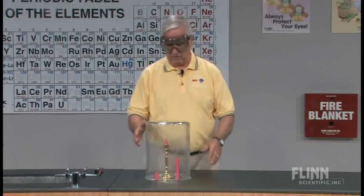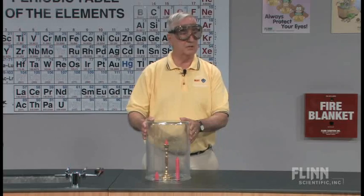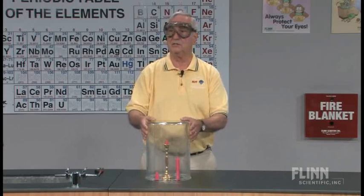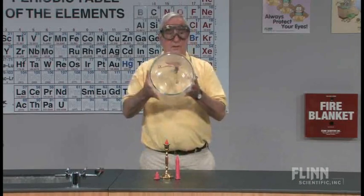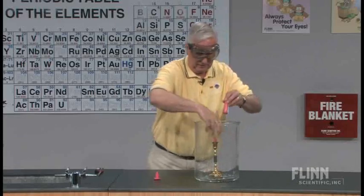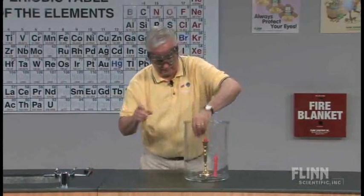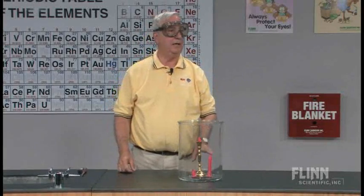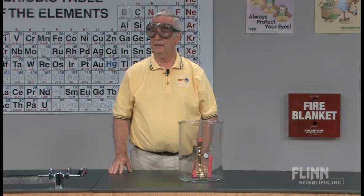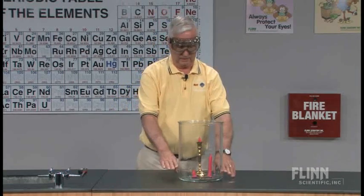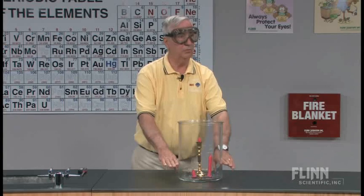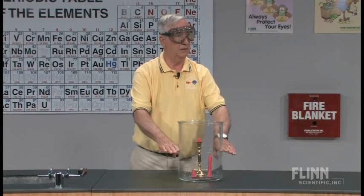A neat alternative and corollary to this would be to reverse the experiment. If you have access to some dry ice, take the jar, turn it upright, put your candles into the jar in the same order, light the flames, and put a piece of dry ice in the bottom. Ask the same question — what will happen? As the dry ice begins to sublime, the carbon dioxide, now being cold and more dense, is going to reverse the order and the shorter candle will go out first, then the middle, then the top one.